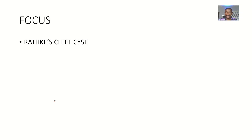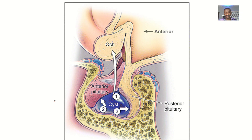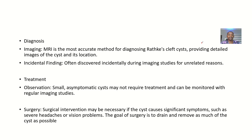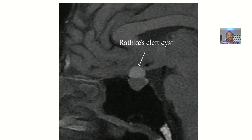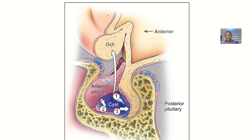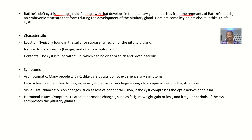For this topic we are looking at Rathke's cleft cysts. A Rathke's cleft cyst is a benign, fluid-filled cyst that develops in the pituitary gland — specifically in the space between the anterior pituitary and the posterior pituitary. It arises from the remnants of the Rathke's pouch, which is an embryonic structure that forms during the development of the pituitary gland.